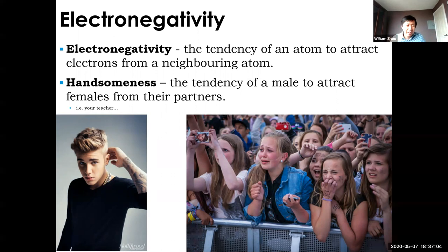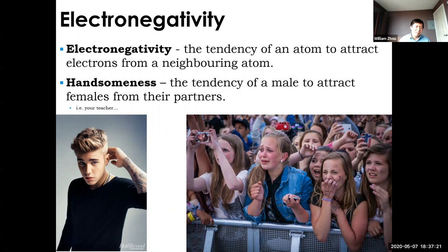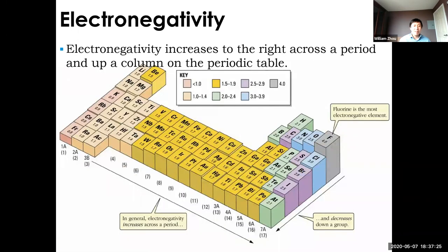An analogy would be handsomeness — the tendency of a male to attract a female. Justin Bieber would be an example of a handsome individual; he has a lot of fans and fangirls who flock toward him. So if Justin Bieber was an element, he would have high electronegativity. Different elements have different electronegativities — some are similar, but generally they're different.